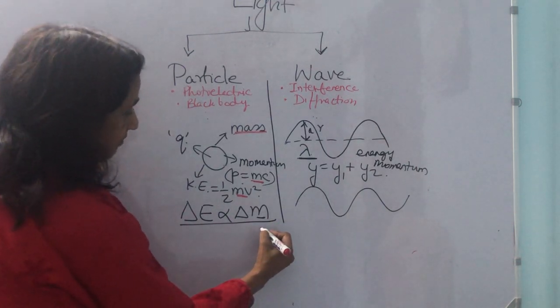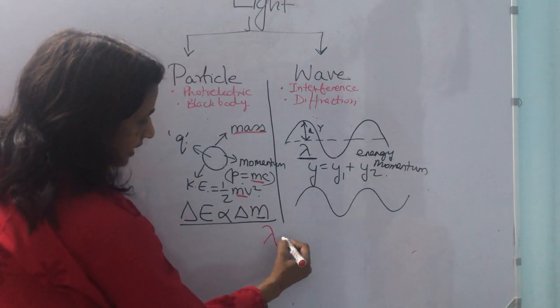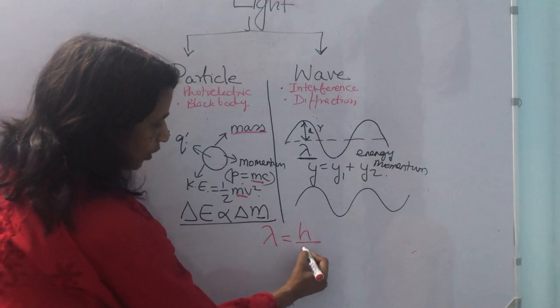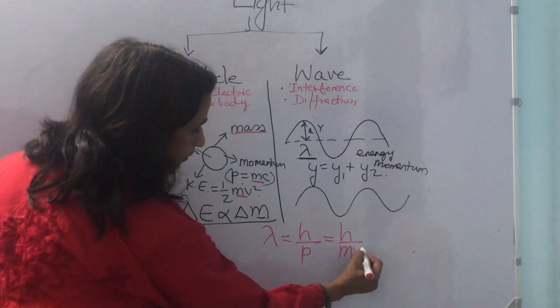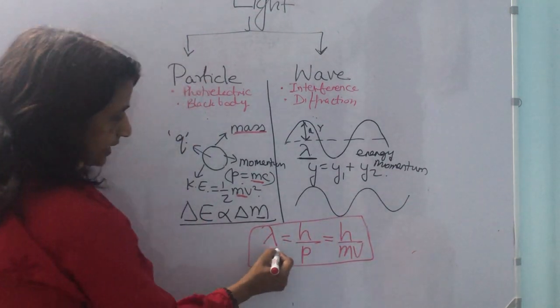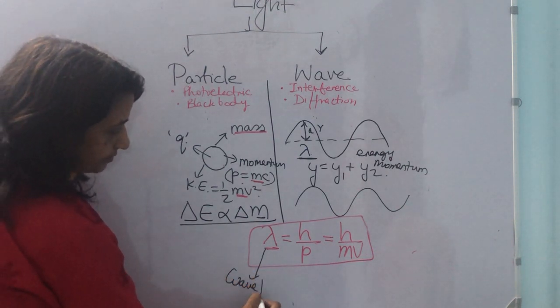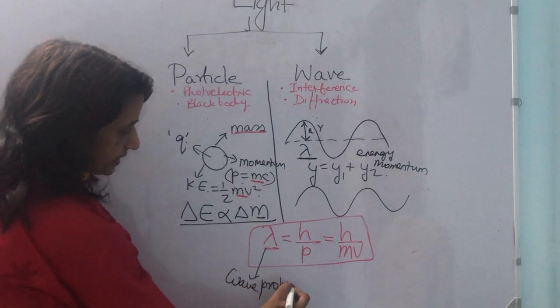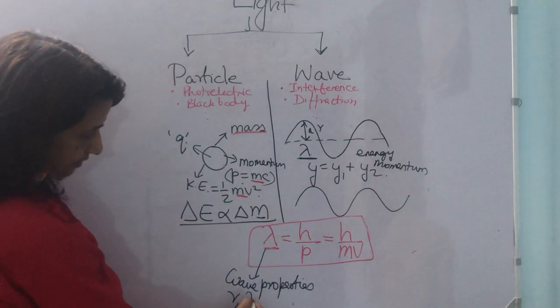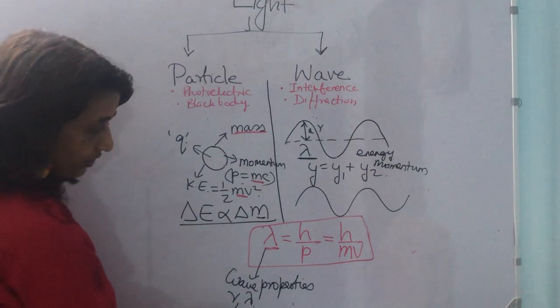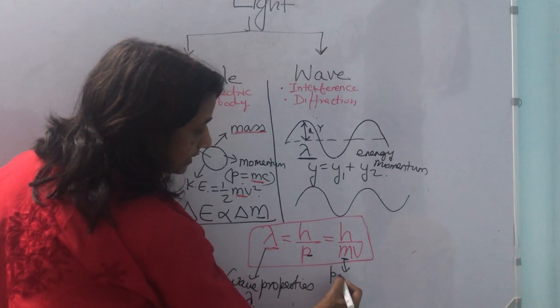That is, lambda equals h over p, or h over mv. This is showing all the wave properties. That is, wavelength, frequency, wavelength, frequency, etc. This part, momentum, is showing all the particle aspects.